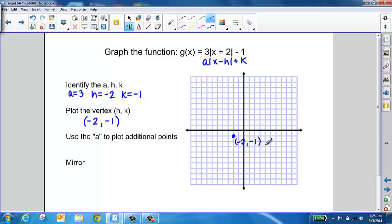And then we're going to use the a to plot additional points. Now since that a has a value of 3, we're going to essentially use this as our slope and turn this into a slope of 3 over 1. Now starting at that vertex, from here you're going to go up 3 and to the right 1. Up 3 and to the right 1.